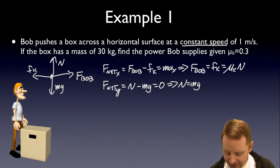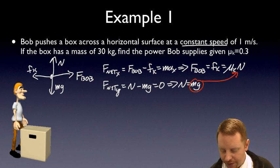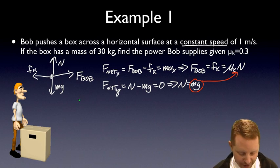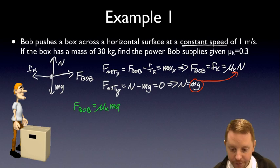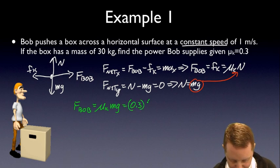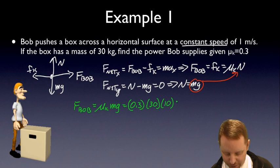Now I can take a look, and since normal force equals mg, I can replace normal force in my equation over there with mg. When I do that, I find that the force of Bob must be equal to mu k mg, or 0.3 times the mass of the box, 30 kilograms, times the acceleration due to gravity, we'll estimate at 10 meters per second squared, or 300 times 0.3, 90 newtons.